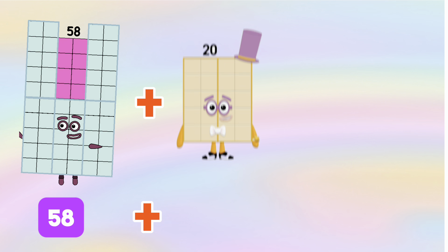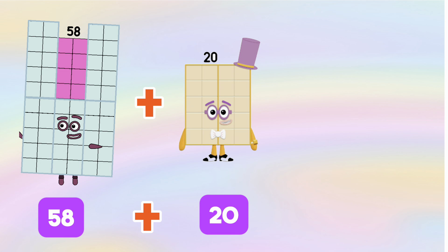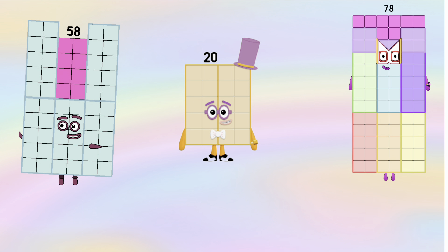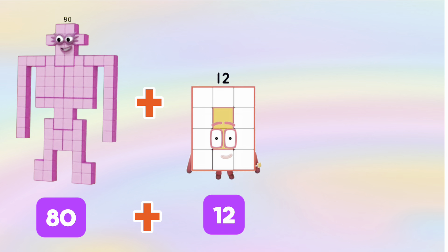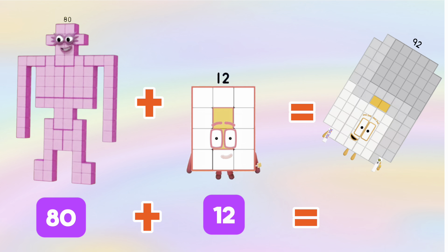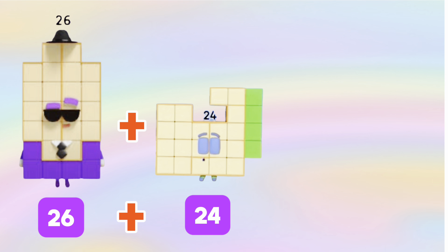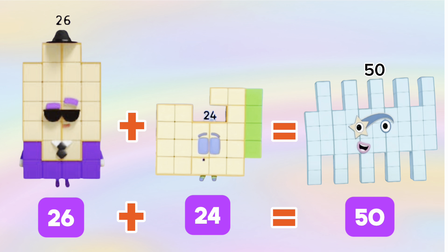58 plus 20 is equals to 78. 80 plus 12 is equals to 92. 26 plus 24 is equals to 50.